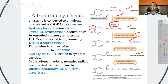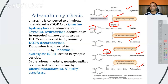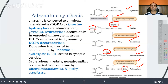After dopamine is formed, it is converted into noradrenaline in the presence of dopamine beta-hydroxylase. This is again a hydroxylase enzyme, so it adds another OH group. Once noradrenaline is formed, it is converted into adrenaline, but this conversion takes place only in the adrenal medulla, in the presence of phenylethanolamine-N-methyltransferase (PNMT), which transfers a methyl group to the NH group.